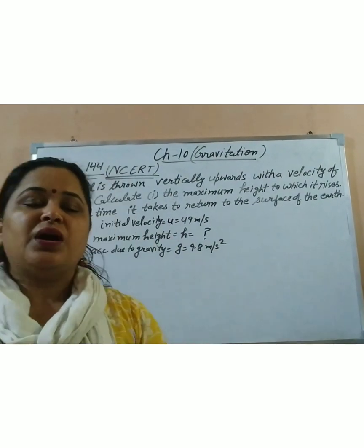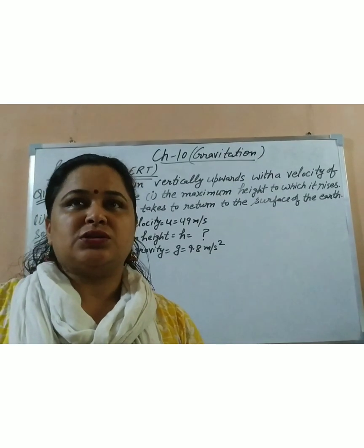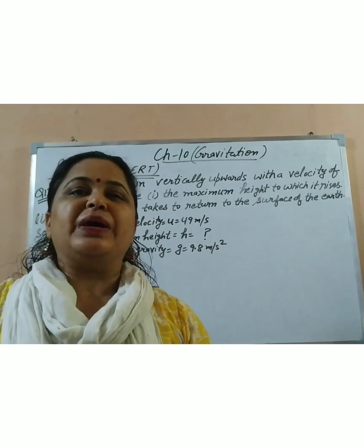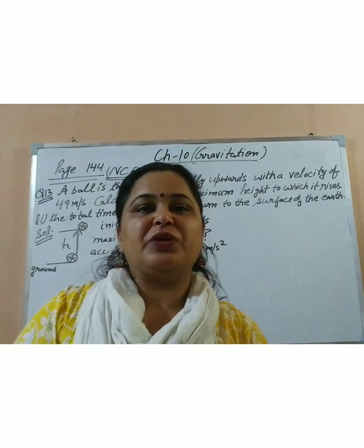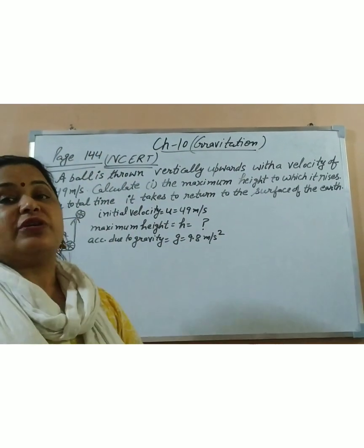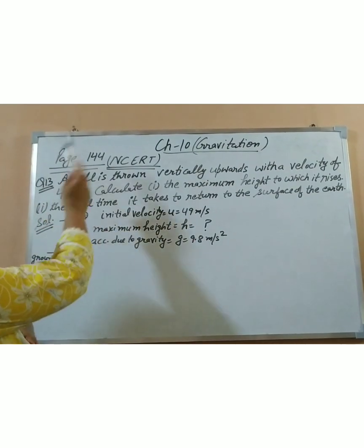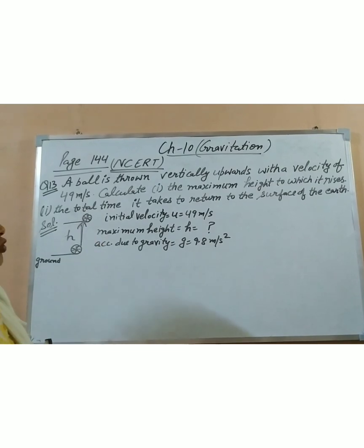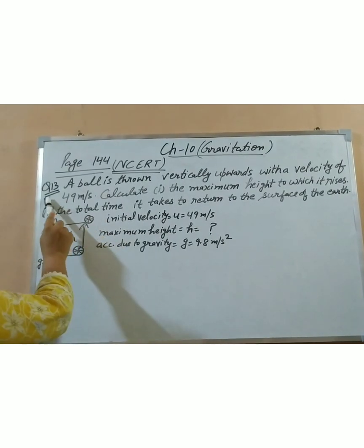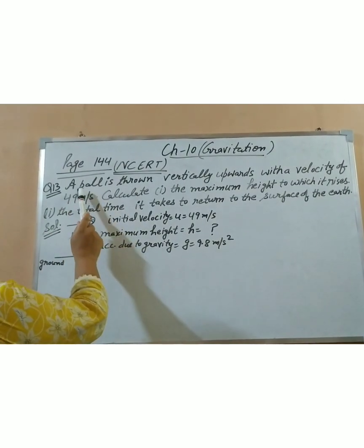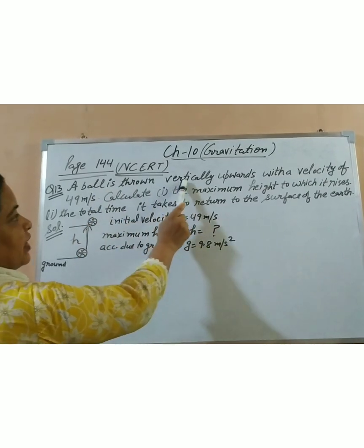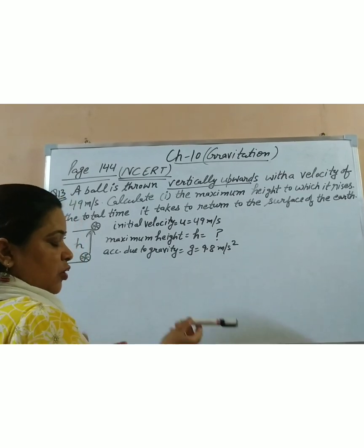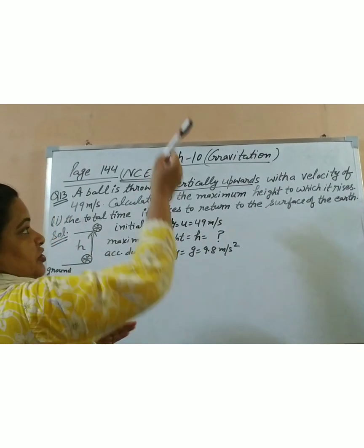In the last video I explained a numerical, and now we are doing the back exercise numericals which are given on page number 144 of your NCERT. The first numericals are related to free fall equations. Question number 13 is: a ball is thrown vertically upward — like this is a ball and you will throw it upward.